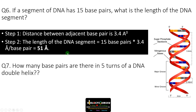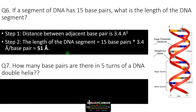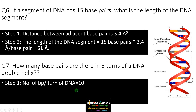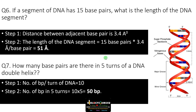Question number 7: how many base pairs are there in 5 turns of a DNA double helix? We need to know that a single turn of DNA is made up of 10 base pairs. So the number of base pairs in 5 turns is 10 into 5, that is 50 base pairs.